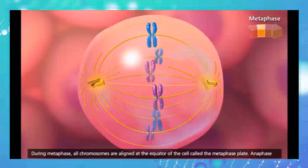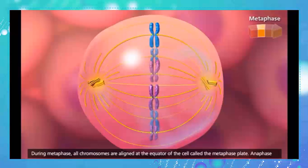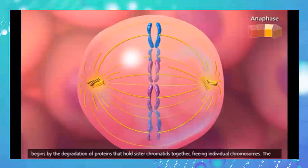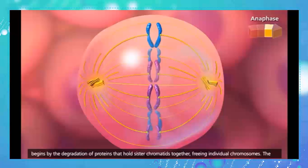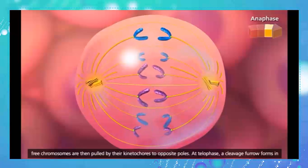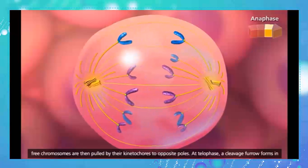During metaphase, all chromosomes are aligned at the equator of the cell, called the metaphase plate. Anaphase begins with the degradation of proteins that hold sister chromatids together, freeing individual chromosomes. The free chromosomes are then pulled by their kinetochores to opposite poles.